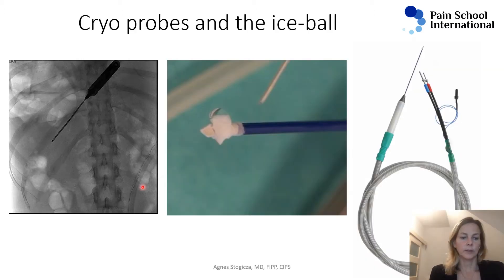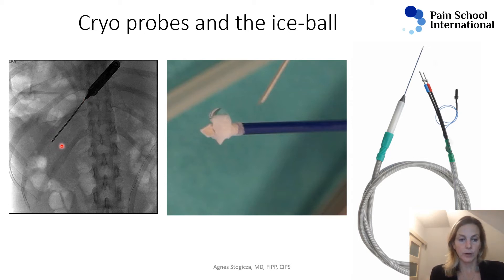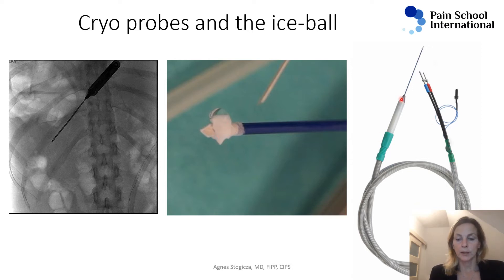This is how the cryoprobe looks, and you can see how big it is compared to a rib, which will make navigation much harder. Here you can see the cryoprobe — I was dripping local anesthetic on it to check if it freezes prior to the procedure — and that's how a single-use probe looks that you can throw away.